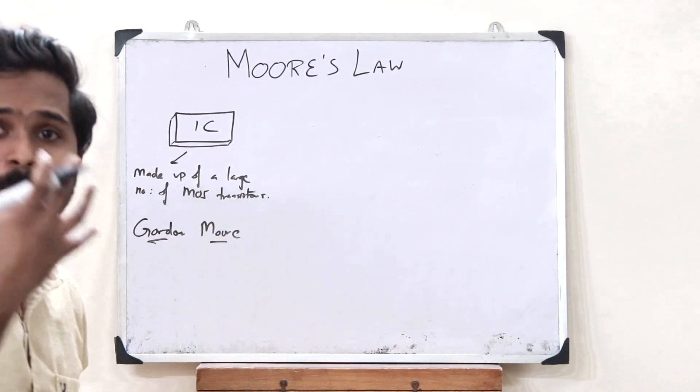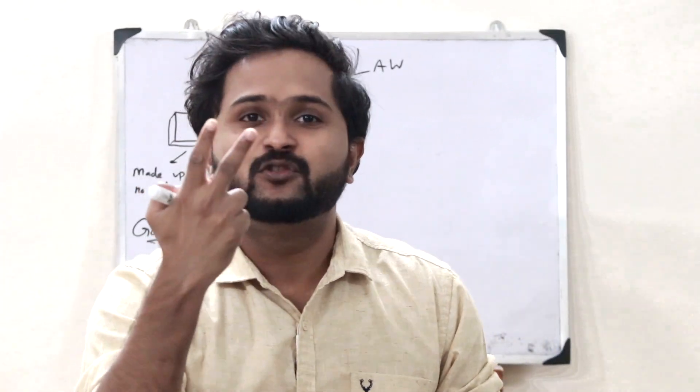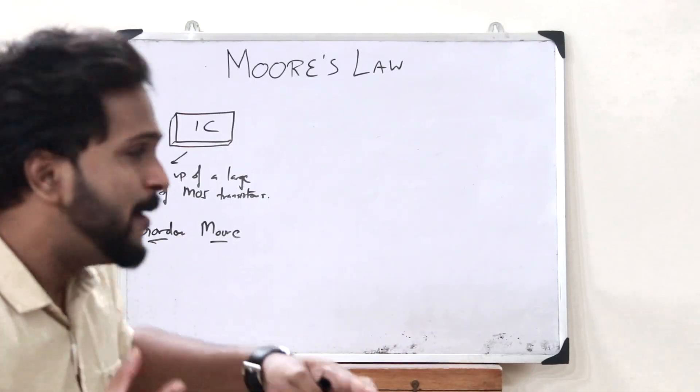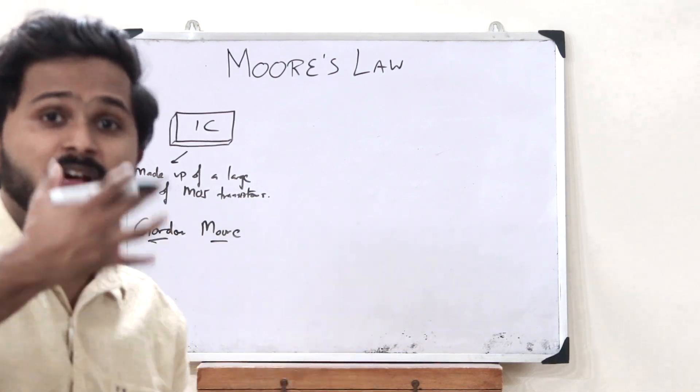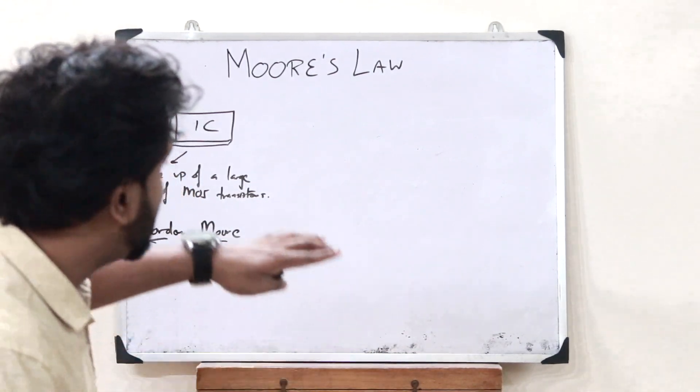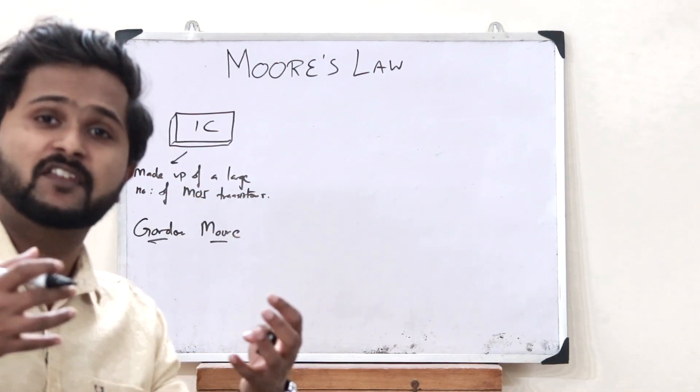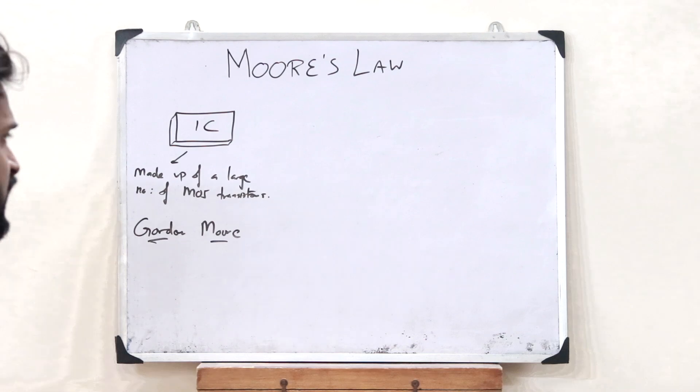When Gordon Moore started observing this, he deduced that with every two years, the number of transistors present inside an integrated circuit would be doubled. That is, with every two years, the number of transistors would start doubling. That is what Gordon Moore said.